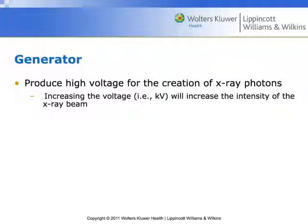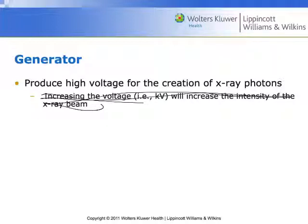The textbook states that increasing voltage KV increases x-ray beam intensity and thereby reduces patient dose — this is simply not true for CT. It was a belief that came out of diagnostic x-ray. Current research tells us this is not the case anymore because of the computational part of CT. The two big areas driving CT research right now are largely the computational parts, since the hardware — the gantry — is pretty stable.